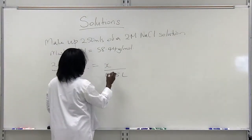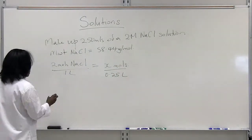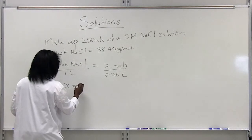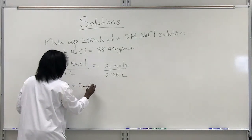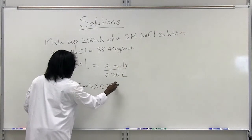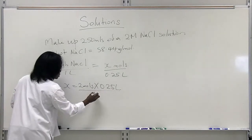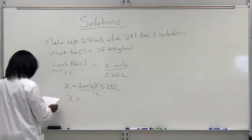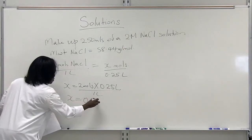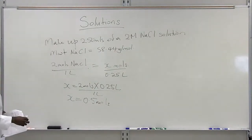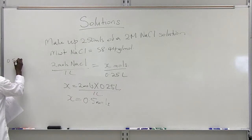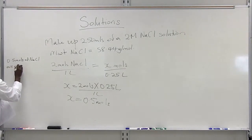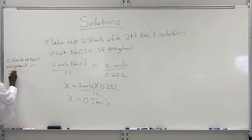Our unknown here is x moles, so we are solving for moles first. The moles of sodium chloride in 250 mL of solution would be 2 moles times 0.25 liters divided by 1 liter, since we are cross-multiplying and solving for x. That gives us 0.25 moles. So we know that 0.25 moles of sodium chloride are present in 250 mL.